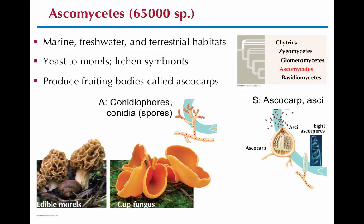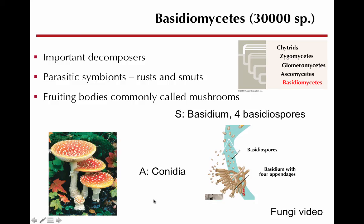Ascomycetes are called sac fungi, named for their ascus — sacs that contain the spores. Conidia and conidiophores are the asexual reproductive structure; the ascocarp with asci and ascospores inside is the sexual reproductive structure. Many are mushroom-like, but different from classic toadstool mushrooms. Examples include morels, most yeasts, and many lichen symbionts.